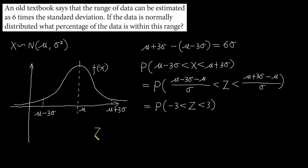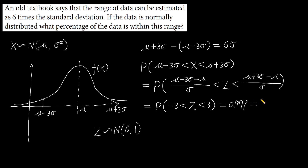Here, z follows the normal distribution with mean zero and variance one. Using a calculator, we find the answer is 0.997, which equals 99.7 percent.